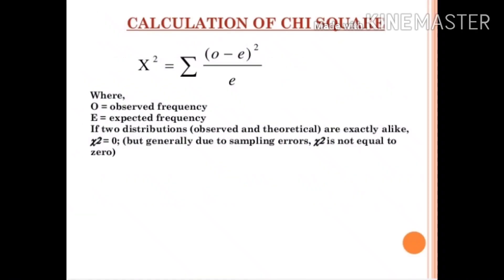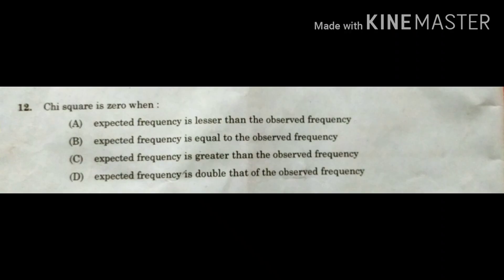The formula for calculation of chi-square is designated by the symbol χ², and the equation is: χ² = Σ(O − E)² / E, where O stands for observed frequency and E for expected frequency. If the two distributions — observed and theoretical — are exactly alike, the chi-square equals zero. Therefore, the correct answer for this question is option B: expected frequency is equal to the observed frequency.